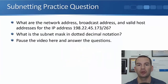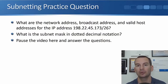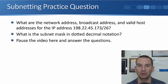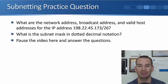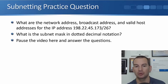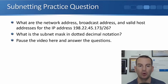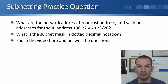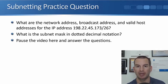Hopefully you've got a good handle on all of the subnetting information we've covered so far and you'd be able to work your way through a subnetting problem. Let's verify that now by doing a practice question. The question is: what are the network address, the broadcast address, and the valid host addresses for the IP address 198.22.45.173/26? And the second part: what is the subnet mask in dotted decimal notation? Stop the video now and figure that out.